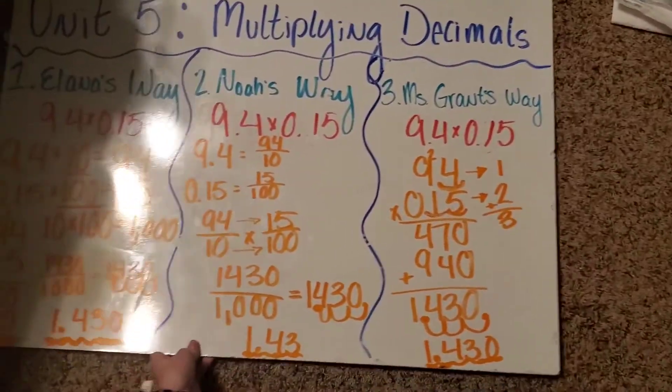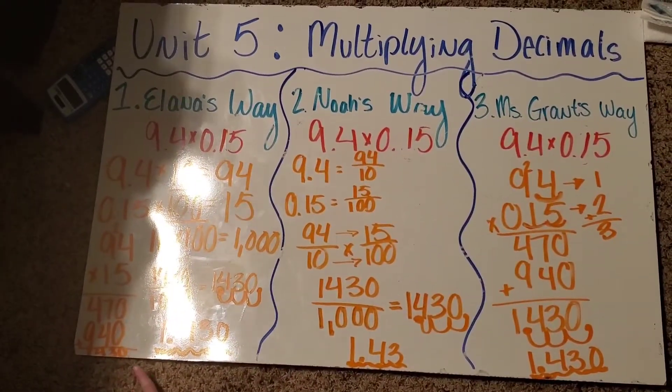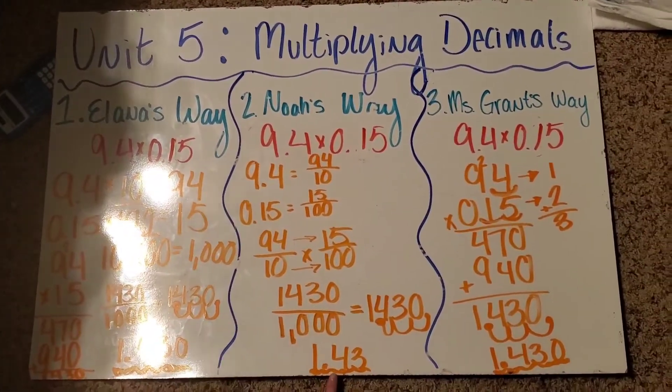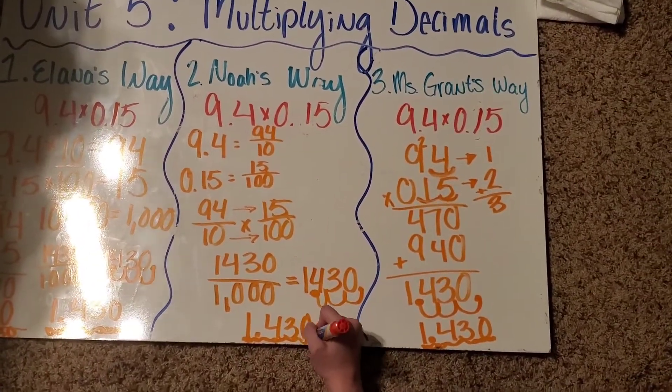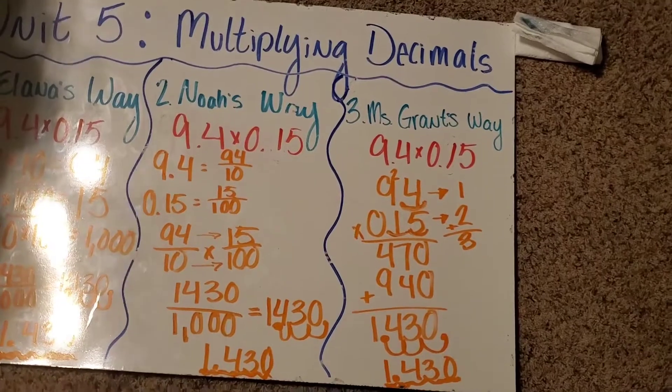Alright. So, all three of these numbers are exactly the same. This one doesn't have a zero, but it doesn't matter. Remember, those zeros you can have or you don't have to have.